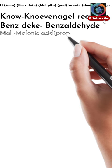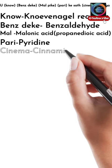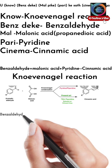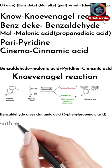In the Knoevenagel reaction: 'benz' stands for benzaldehyde, 'mal' stands for malonic acid (propanedioic acid), 'parike' stands for pyridines, and 'cinema' stands for cinnamic acid. Arranging all parts sequentially, we get: benzaldehyde plus malonic acid, in the presence of pyridine, gives cinnamic acid. This is our nice structural representation of the Knoevenagel reaction.